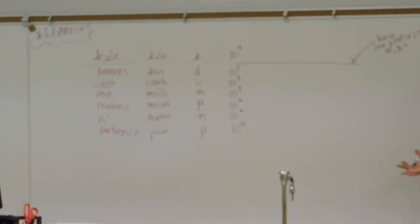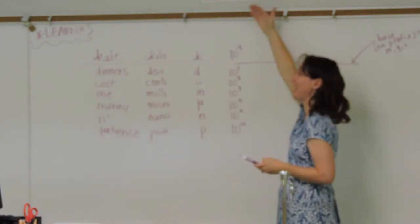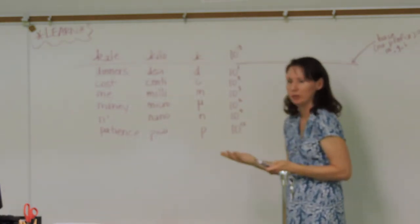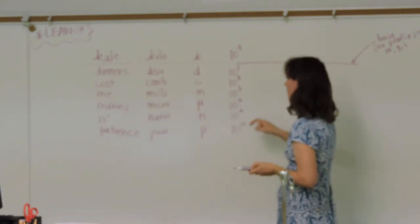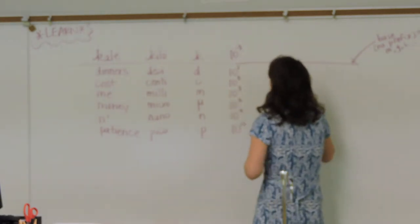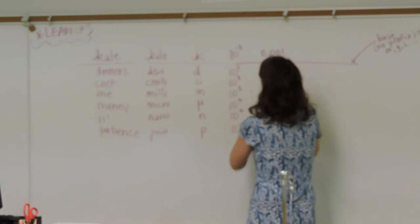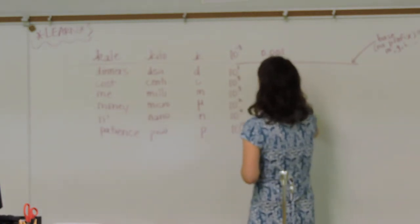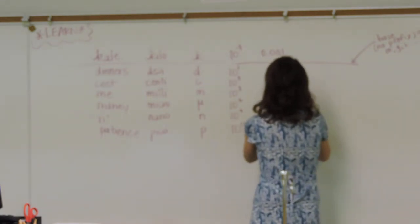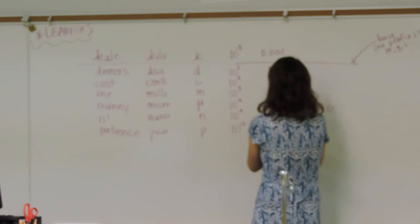There are other prefixes beyond these — mega, giga, tera — but these are the only ones we'll deal with. We're not going to deal with masses or volumes that huge in this class — we're not measuring tera-liters. But we will use milliliters and microliters. So: 10 to the negative 3rd is 0.001; 10 to the 1st is 10; 10 to the 2nd is 100; 10 to the 3rd is 1,000; 10 to the 6th is a million; 10 to the 9th is a billion; 10 to the 12th is a trillion.